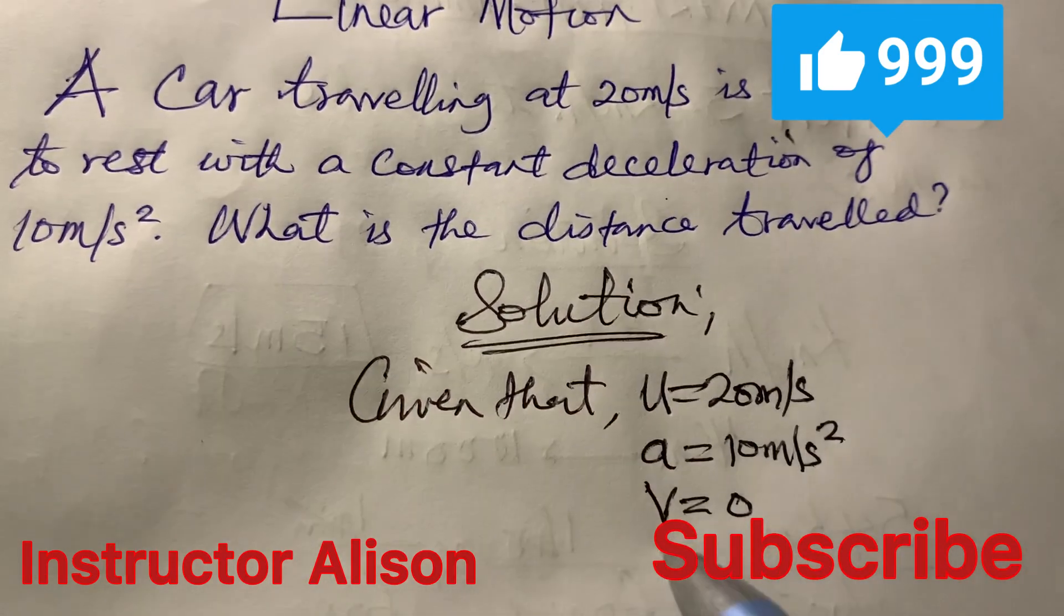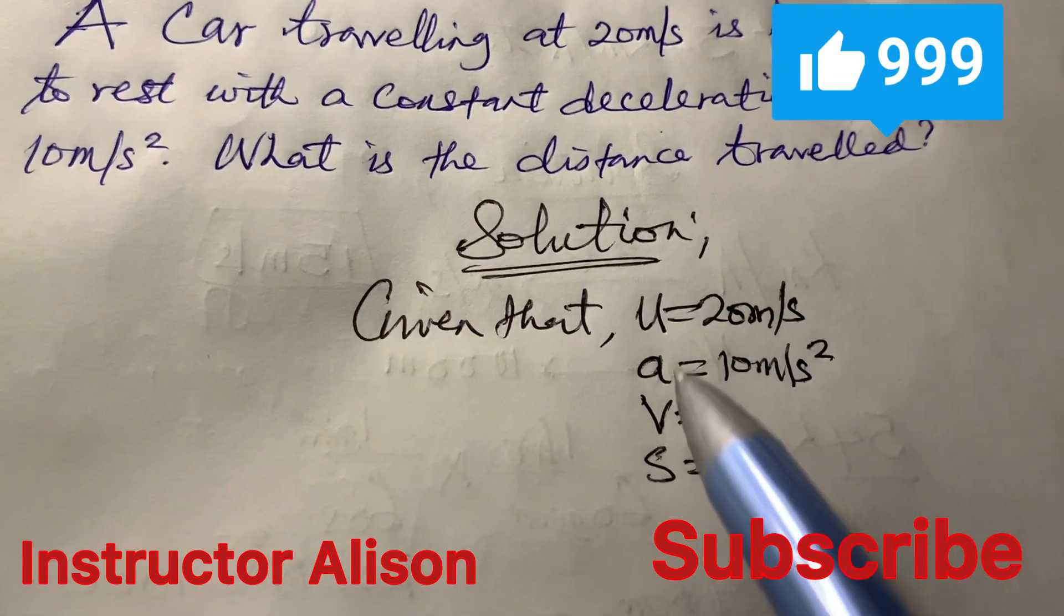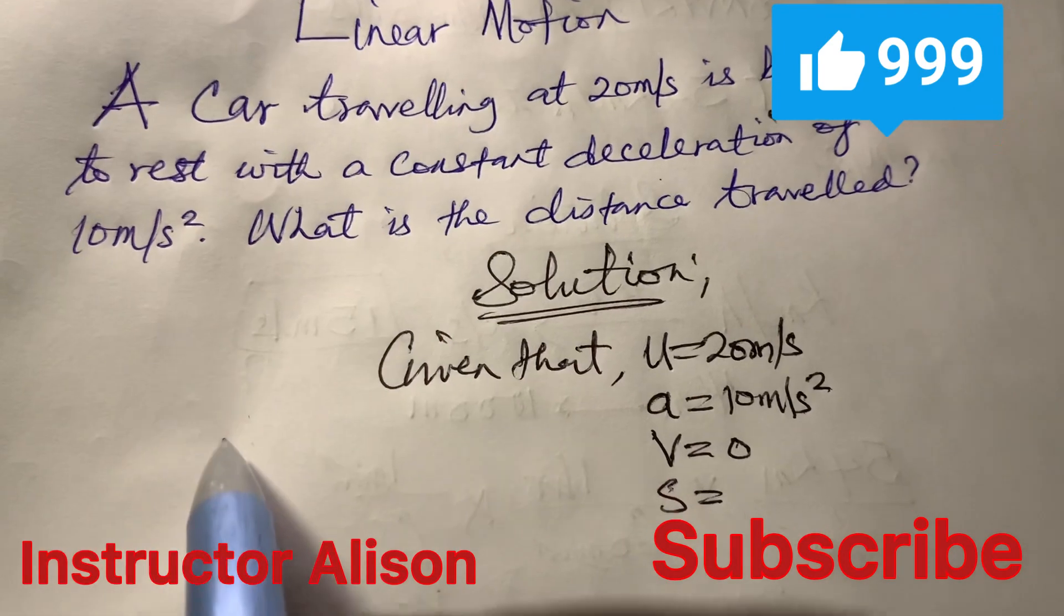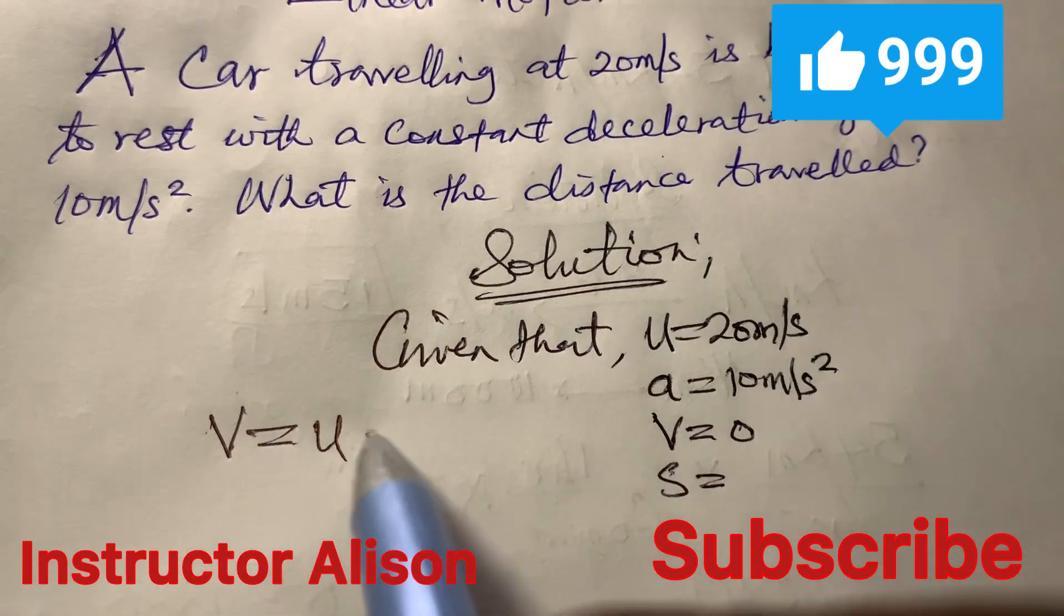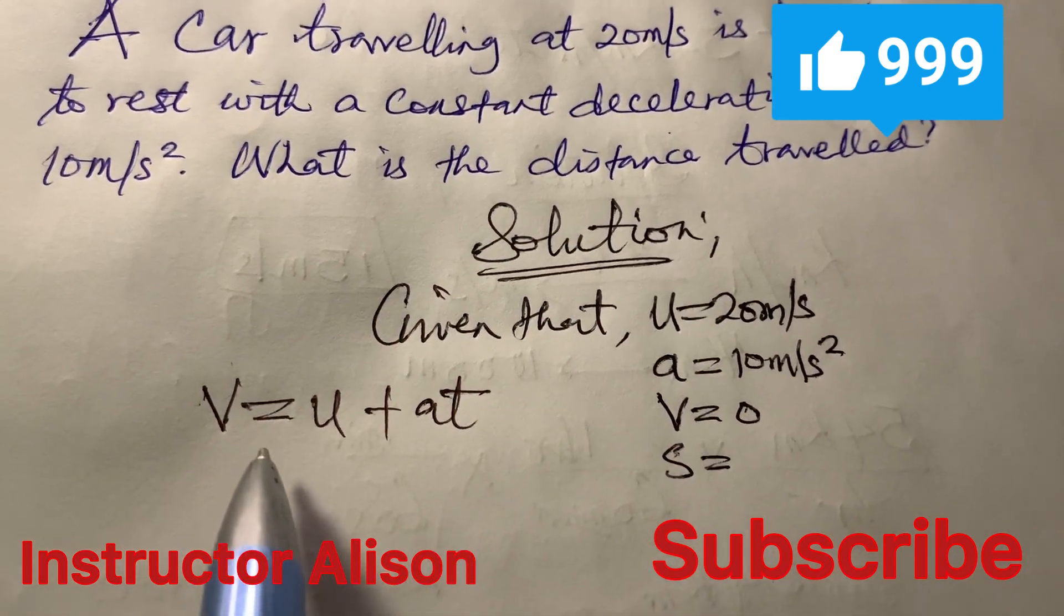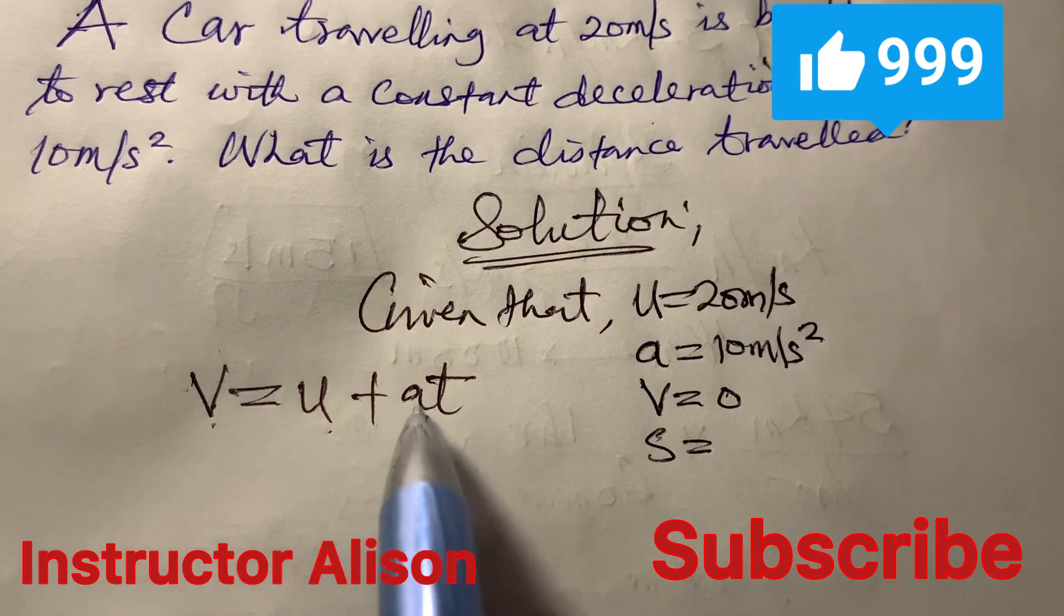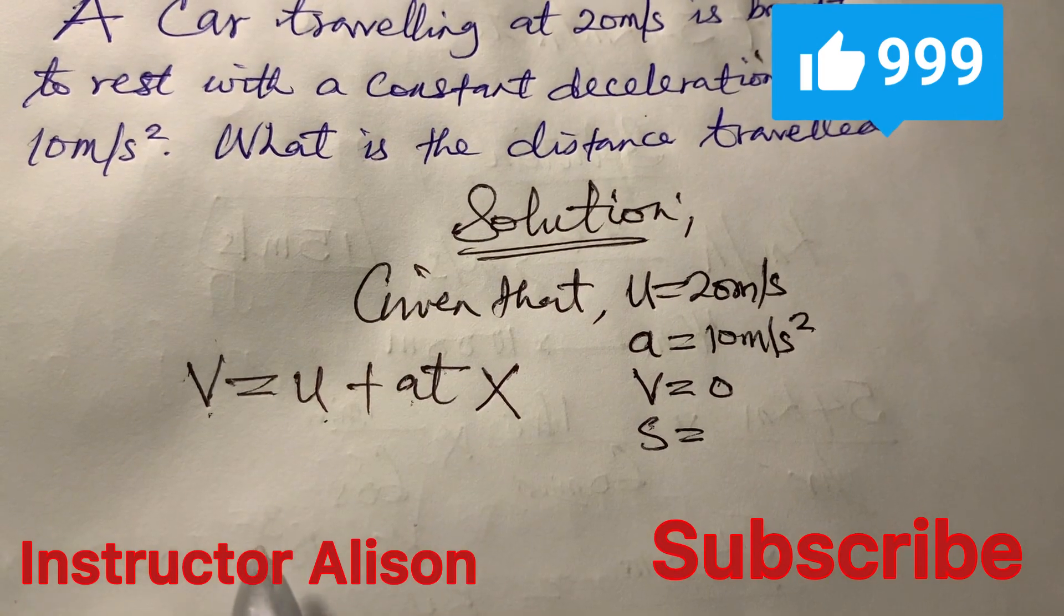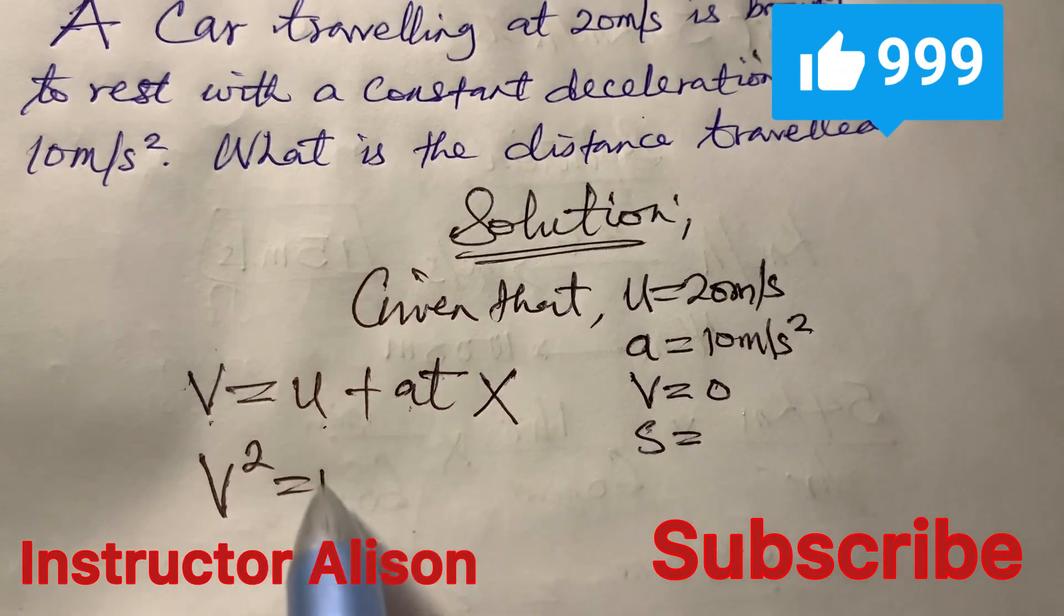The distance is what we are looking for. You can have a formula that connects these things together. Remember the first equation of uniform motion is V equal to U plus AT. If you want to use this particular formula you notice that U is there, V is also there, A is there but T is not given. So you don't want to consider this particular formula.